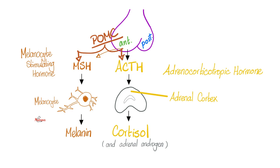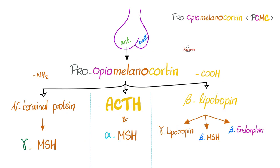ACTH is the adrenocorticotropic hormone — it goes to the adrenal cortex to tell her to secrete cortisol. But MSH, the melanocyte-stimulating hormone, goes to melanocytes to tell them to secrete melanin. For a more detailed view: the anterior pituitary secretes pro-opio-melanocortin, which is a protein. Proteins have an N-terminus on one end and a COOH terminus on the other. The N-terminus gives you N-terminal protein, and the COOH-terminus gives you beta-lipotropin. In the middle, you have ACTH and alpha-MSH. The N-terminal protein gives you gamma-MSH. Beta-lipotropin gives you beta-endorphin — the natural endogenous painkiller — and beta-MSH, which stimulates melanocytes to secrete melanin.